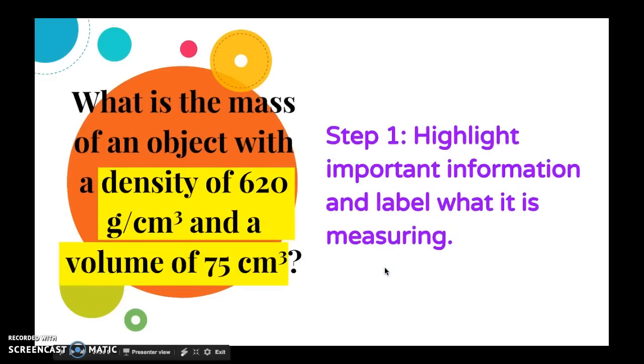So first we're going to highlight the important information and label what it is describing. So we have density, 620 grams per cubic centimeter. So I would write 620 in the lower left hand corner of the visual, and I'd write 75 in the lower right hand corner. Because they're next to each other, this means that we're going to end up multiplying them. And we are going to be looking for mass. So our equation is mass equals density times volume.